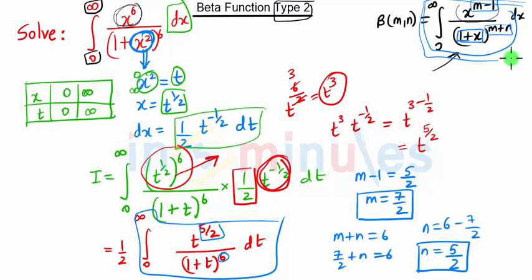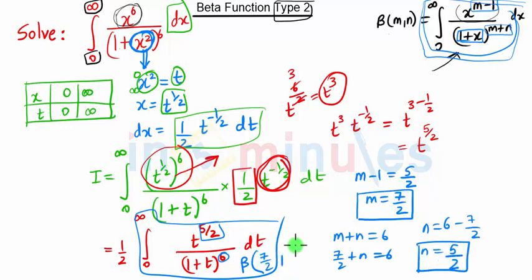This equation is nothing but beta of m comma n. So this equation is also beta of m comma n. In our case m is 7 by 2 and n is 5 by 2. So this whole term is nothing but beta of 7 by 2 comma 5 by 2.